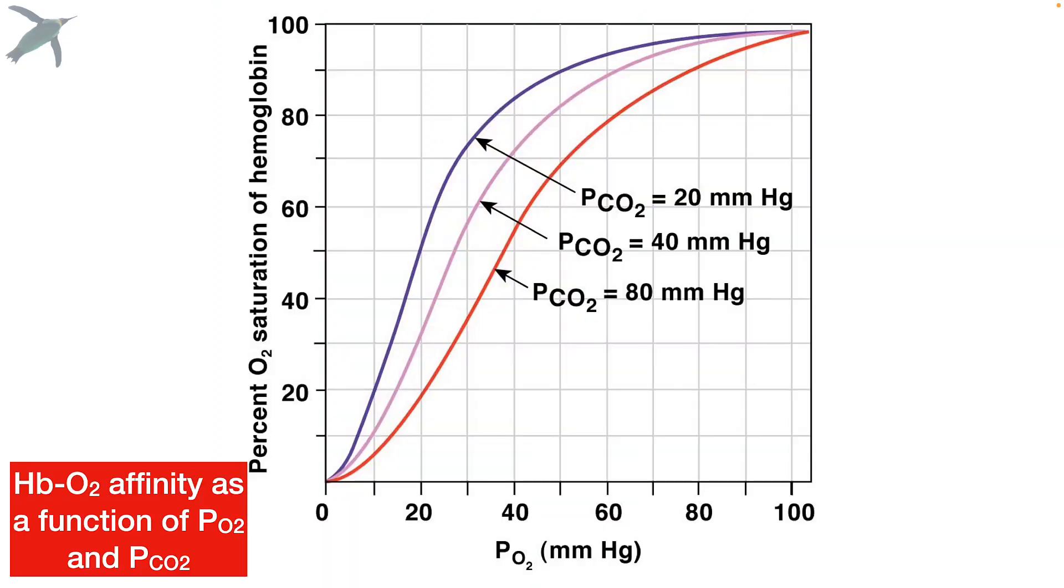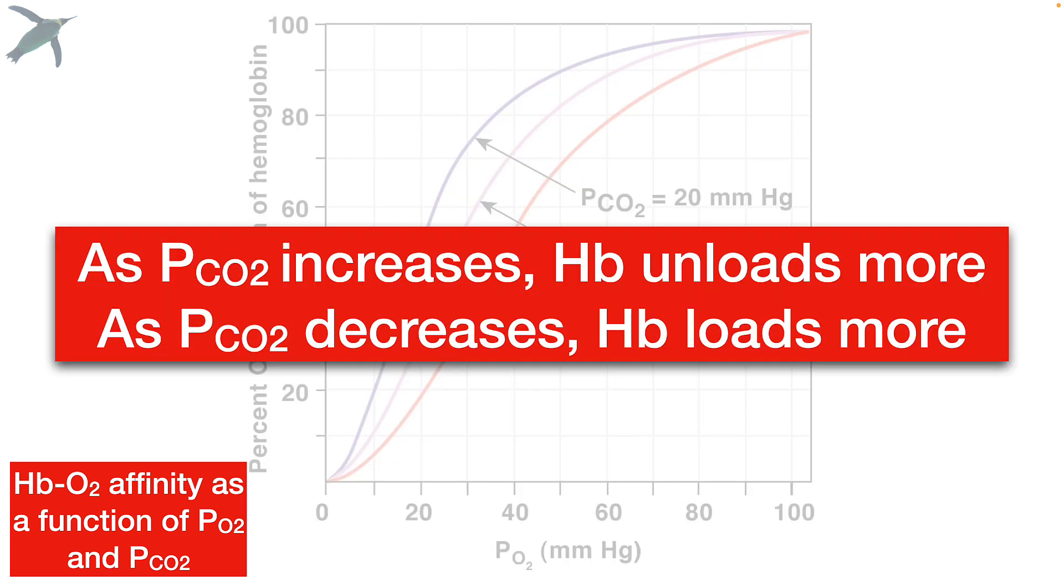Let's look at one more. The partial pressure of CO2. When the partial pressure of CO2 goes down, the curve shifts to the left and the saturation goes up. When the partial pressure of CO2 goes up, the saturation goes down. And we see the curve shifts to the right. So as PCO2 goes up, hemoglobin unloads more. And as PCO2 goes down, hemoglobin loads more.